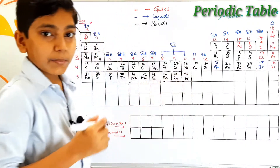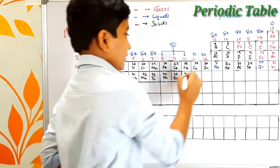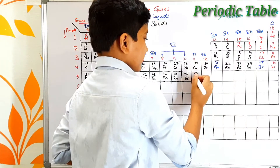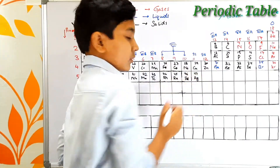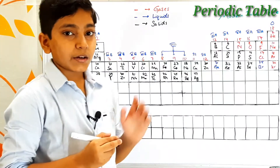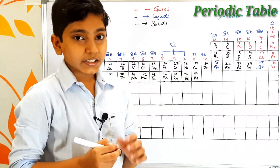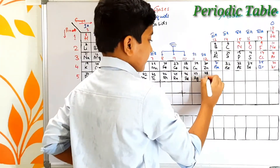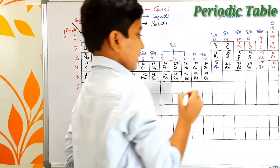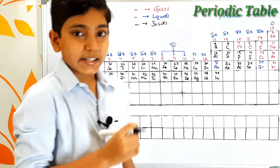After palladium we find an element most of you are familiar with — atomic number 47, which is silver. Silver's symbol is Ag, which comes from the Latin name argentum. Next, atomic number 48 is cadmium and atomic number 49 is indium — its symbol is In.